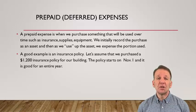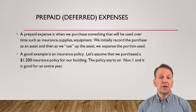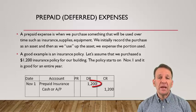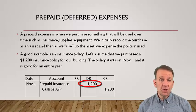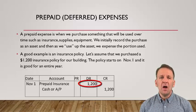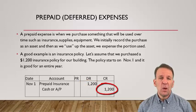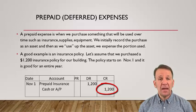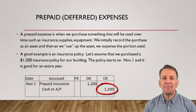Let's assume that we are purchasing a $1,200 insurance policy on our building. The policy will begin on November 1st. You can see in this journal entry that we debit prepaid insurance $1,200. Prepaid insurance is an asset — we own this insurance policy and it will be good for the next 12 months. Our credit in the journal entry is to either cash or accounts payable. We would credit cash if we actually paid for the policy now, or credit accounts payable if we haven't paid for it yet.